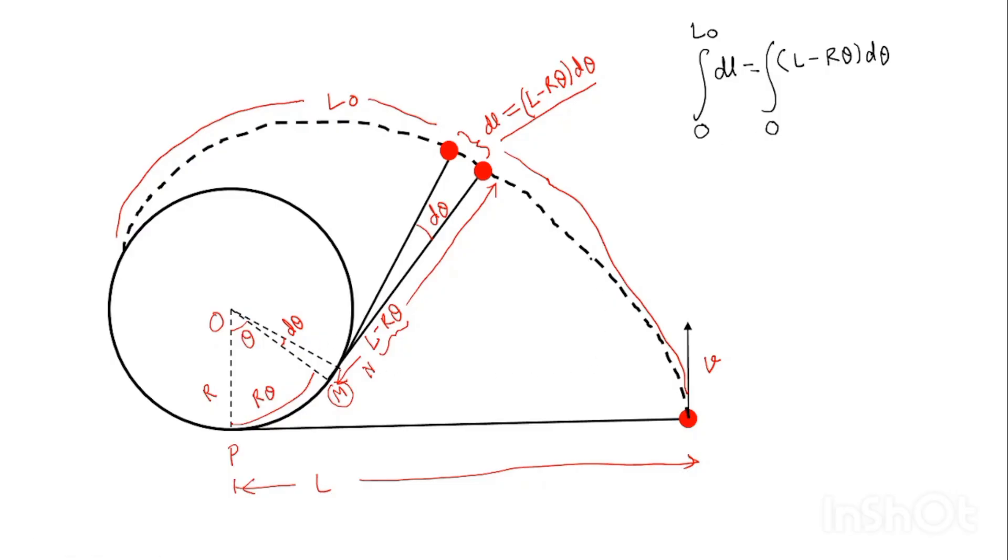Now, when the whole string is wrapped around the cylinder, that means the ball has reached over and collided over here, then what will be the angle subtended at the center by the thread? It will be whole of this angle. This whole angle will be what? If L is the string length, then L is equal to R times θF, where θF is the final angle, this black one. So, θF is L upon R.